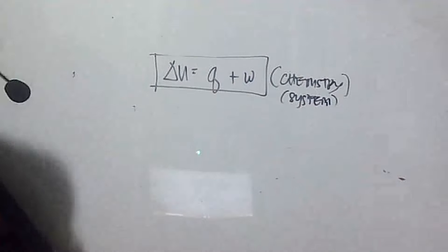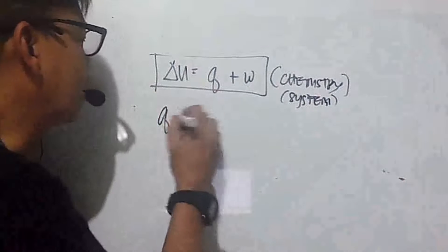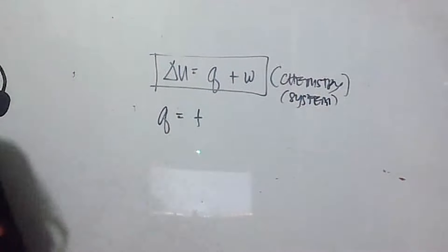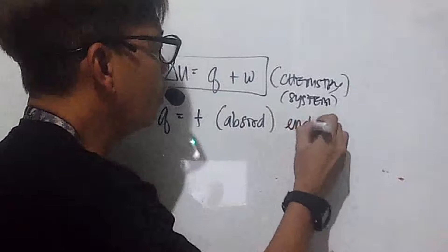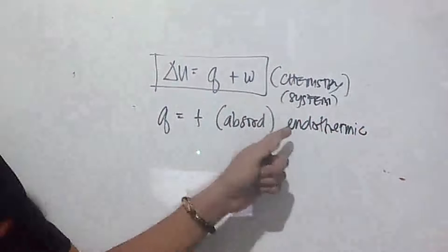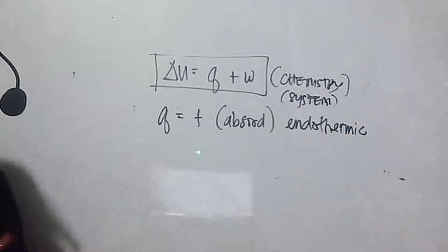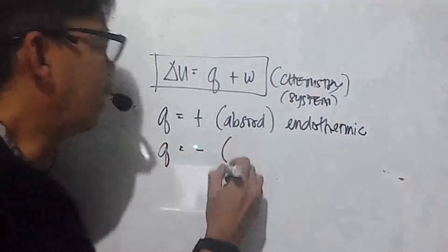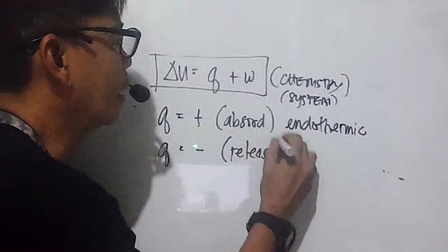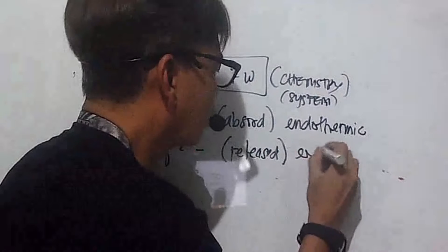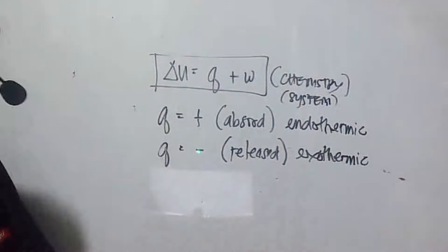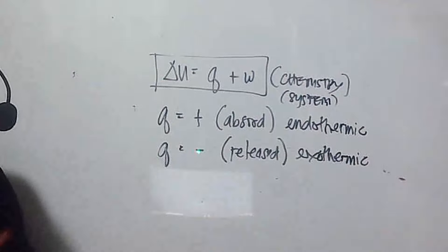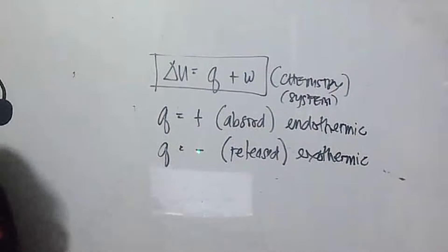For the chemistry formula: q is positive when heat is absorbed by the system — this is called an endothermic process. When heat is negative, it means heat is released by the system — this is called an exothermic process. So positive q equals endothermic, and negative q equals exothermic.